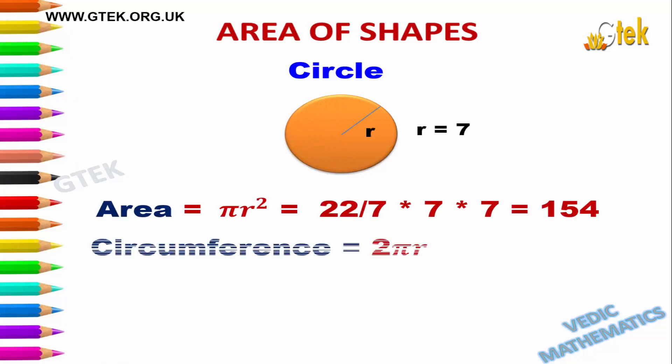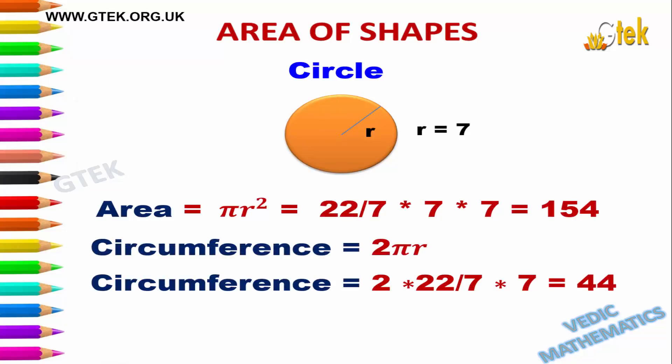The circle has a radius value of 7. We can calculate the area of the circle as well as the circumference of the circle with this radius.